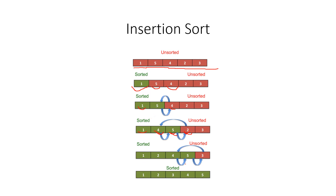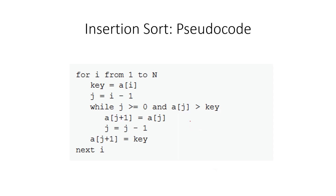On the next step we compare 3 with 5 — move 5 right. Compare 3 with 4 — 4 is bigger, so 4 moves right and 3 goes there. Compare 3 with 2 — 2 is less than 3, so we stop. In the end we have the sorted array.